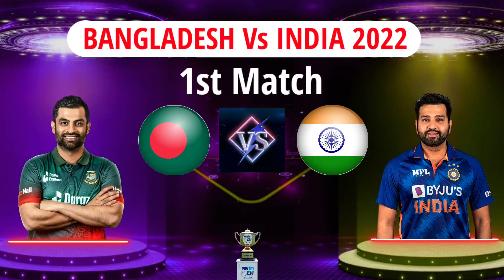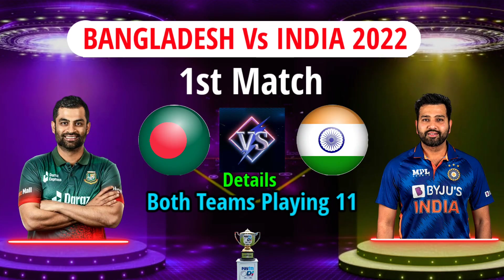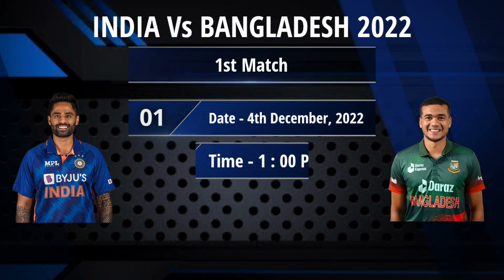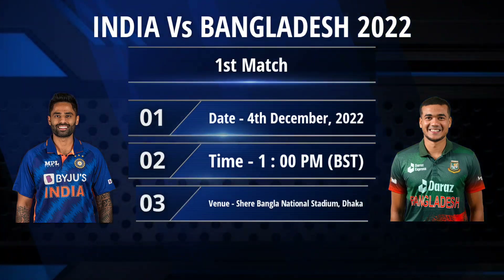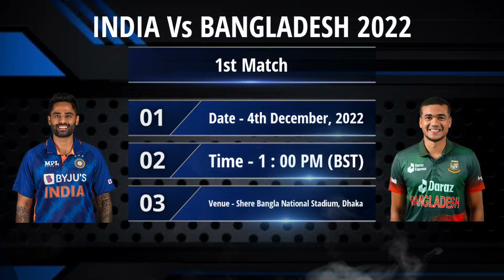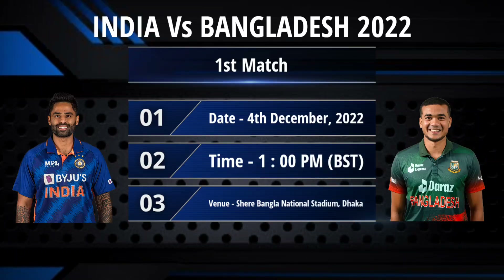Bangladesh versus India first ODI match details and both teams playing 11. Date: 4th December 2022, 1 p.m. Bangladesh Standard Time. Venue: Shere Bangla National Stadium, Dhaka.